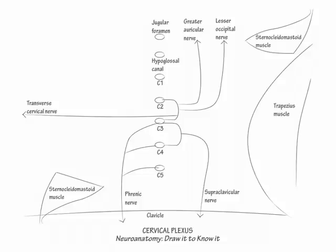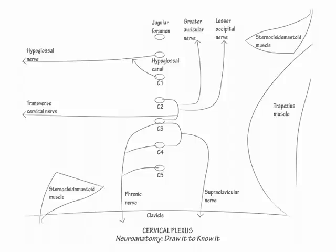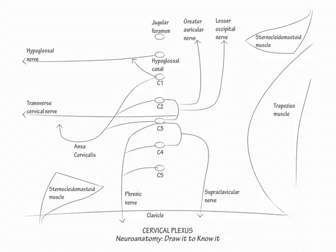Next, draw the hypoglossal nerve as it exits the hypoglossal canal and innervates the musculature of the floor of the mouth. It is primarily constituted by cranial nerve 12; however, for completeness, show C1 fibers also supply it. Thus, although cranial nerve 12 is the primary innervator of the floor of the mouth, C1, via the hypoglossal nerve, also helps supply it. Draw a separate branch from C1 that descends and connects with the C2 and C3 branches and loops anteriorly in the ansa cervicalis. This bundle provides motor innervation to the hyoid musculature of the neck and then travels back up to join the hypoglossal nerve.